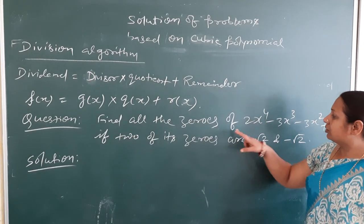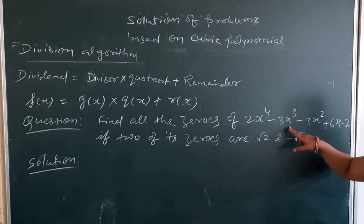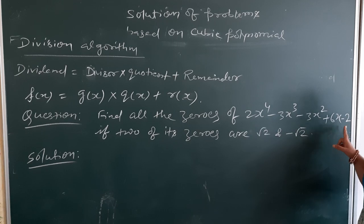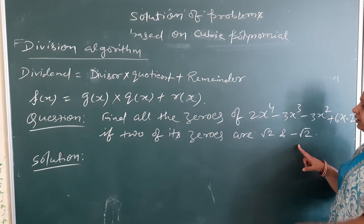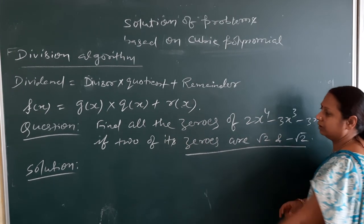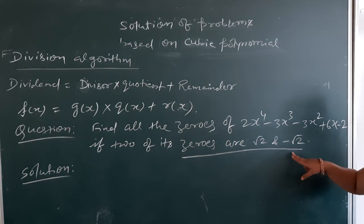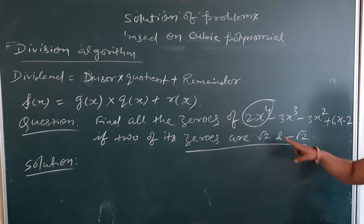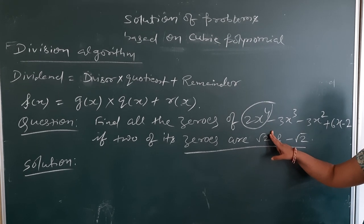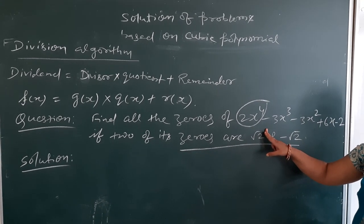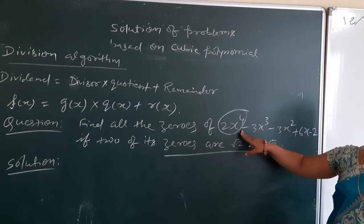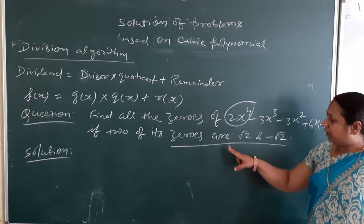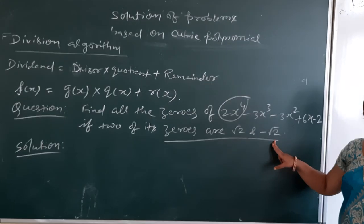Next problem: find all the zeros of the polynomial 2x⁴ minus 3x³ minus 3x² plus 6x minus 2, if two of its zeros are √2 and minus √2. The polynomial is of degree 4, so the total number of zeros will be 4. Two zeros are given, and we have to find the remaining two zeros.